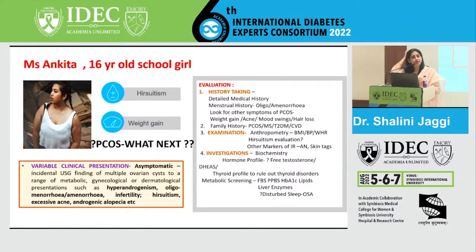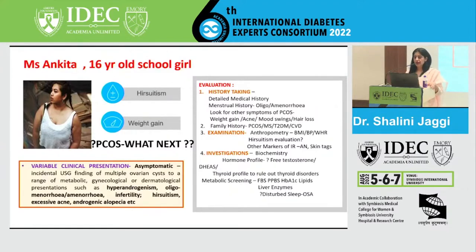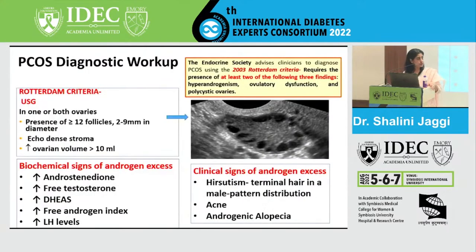For investigations, order basic biochemistry — LFTs, KFTs, CBC. Very important to this diagnosis are free testosterone and DHEAS levels to look for hyperandrogenism, and a thyroid profile to rule out thyroid disorders. Do routine metabolic screening: fasting, postprandial glucose, and HbA1c to screen for pre-diabetes or impaired glucose tolerance. Check liver enzymes for fatty liver association, and screen for obstructive sleep apnea, which is commonly associated with obesity, IGT, and metabolic syndrome.